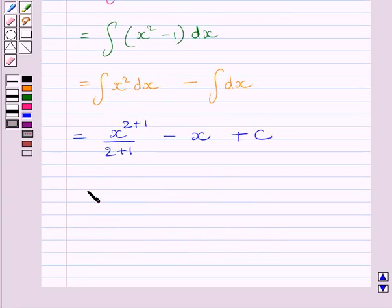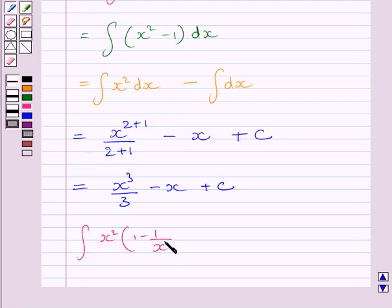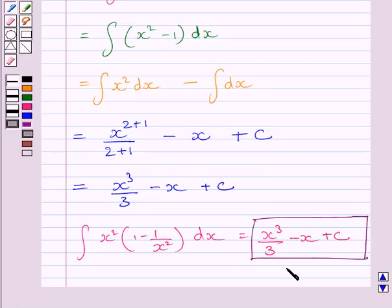Now this expression is further equal to x cube upon 3 minus x plus c. So we get integral of x square multiplied by 1 minus 1 upon x square dx is equal to x cube upon 3 minus x plus c. This is our required answer.